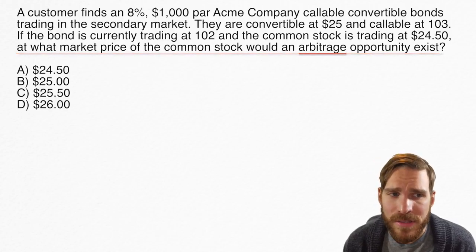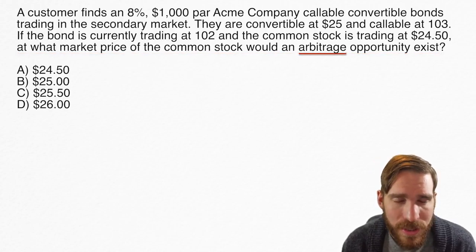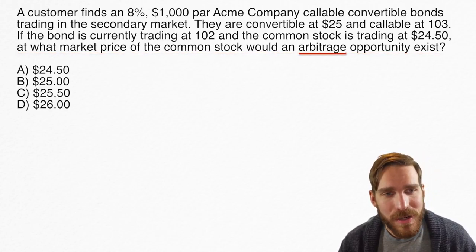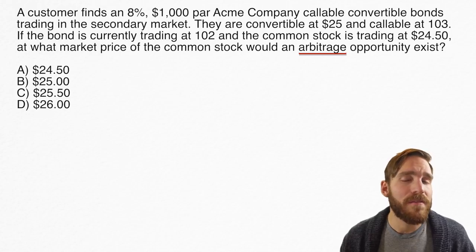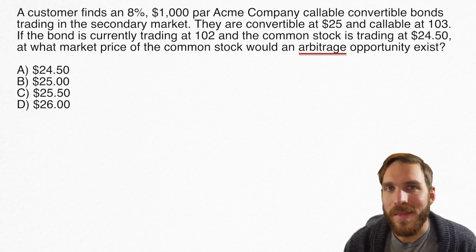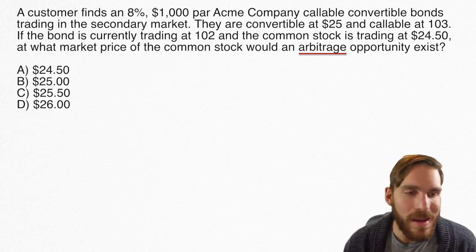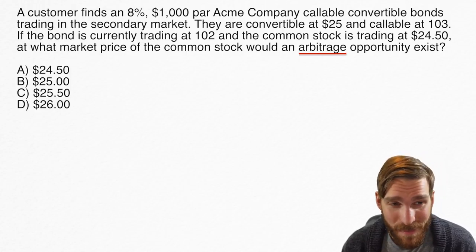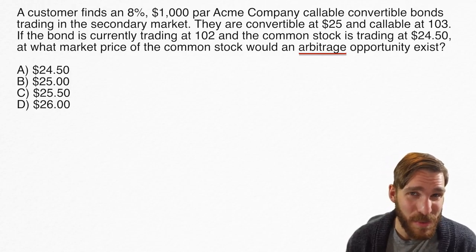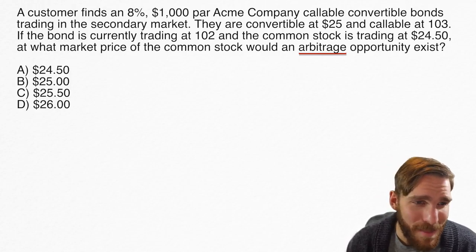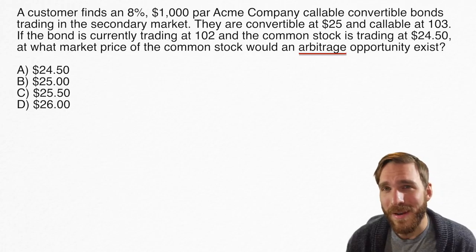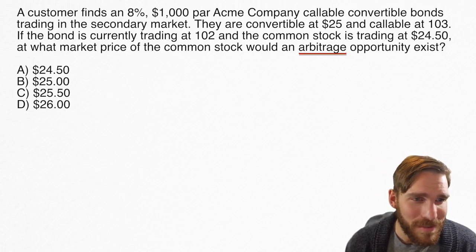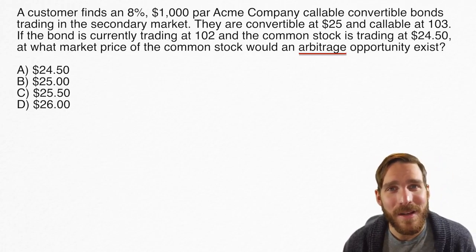The key word there is arbitrage. You will see that a lot with these convertible bond questions, and with other financial-type questions. For something like this, we do not need to know a ton about arbitrage. There's a lot out there — just do a Google search and you'll find papers, algorithms, computers. Forget that stuff for now. Let's talk about how this works.